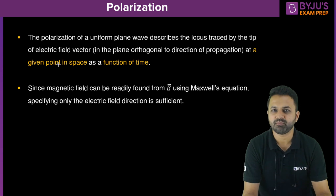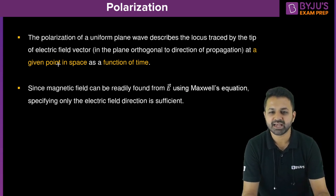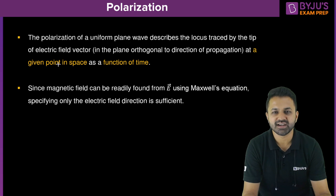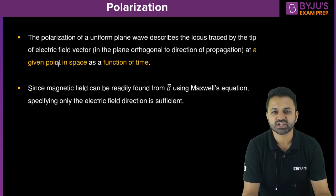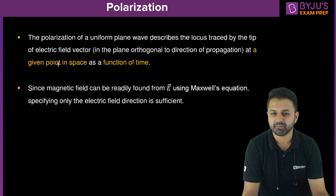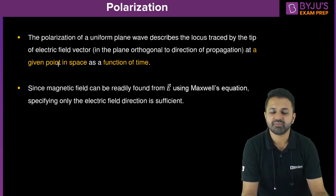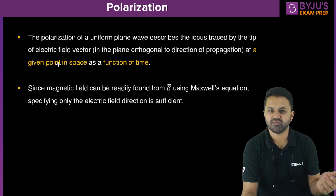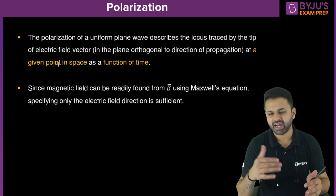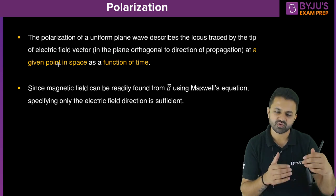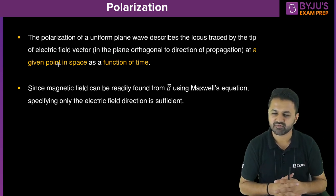What do we mean by polarization? The polarization of a uniform plane wave describes the locus traced by the tip of the electric field in the plane orthogonal to the direction of propagation at a given point in space as a function of time. First of all, an electric field equation or a magnetic field equation will be given to you, and from the magnetic field you can convert to the electric field.